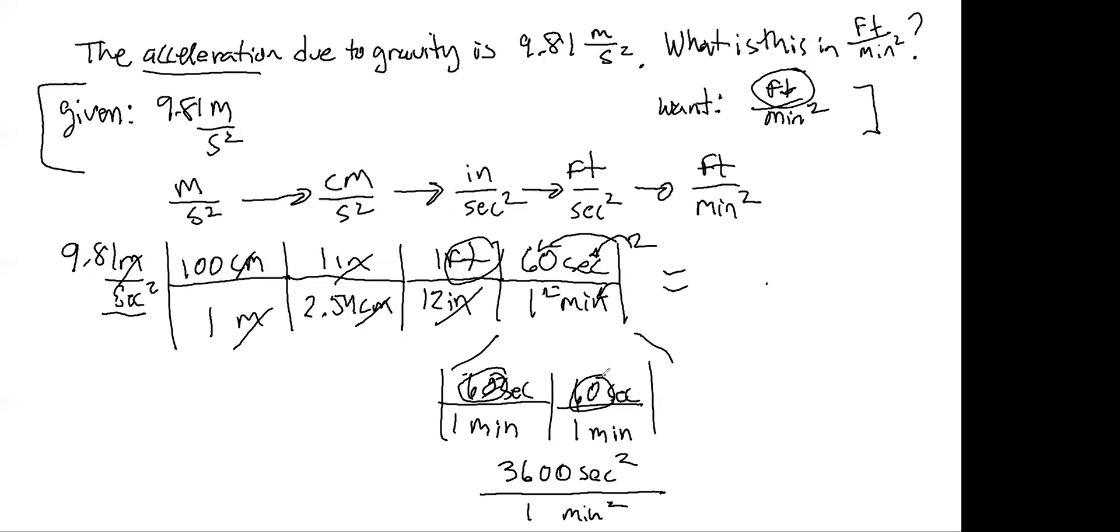So when you actually do this, the 9.81 times the 100 times the 3,600 divided by the product of 2.54 and 12 inches, you should get 1.16 times 10 to the fifth feet per minute squared. And that is an acceleration which is distance over time squared.